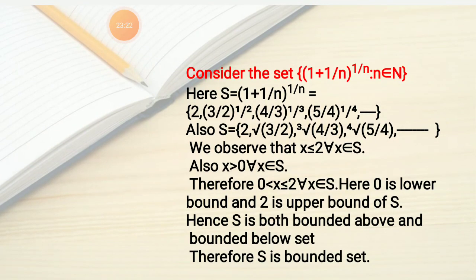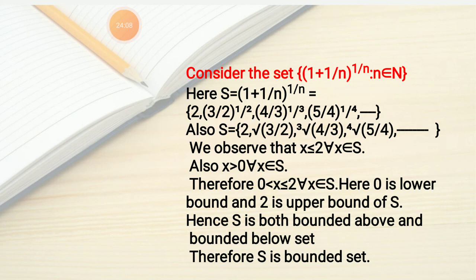Last example: consider S = {(1 + 1/n)^(1/n) : n ∈ N}. When n=1: 2^1 = 2; n=2: (3/2)^(1/2) = √(3/2); n=3: (4/3)^(1/3); n=4: (5/4)^(1/4); and so on. S = {2, √(3/2), ∛(4/3), ...}. All elements are less than or equal to 2, and all are positive, so 0 < X ≤ 2 for all X ∈ S. Hence 0 is a lower bound and 2 is an upper bound of S, so S is both bounded above and bounded below, and therefore S is bounded.